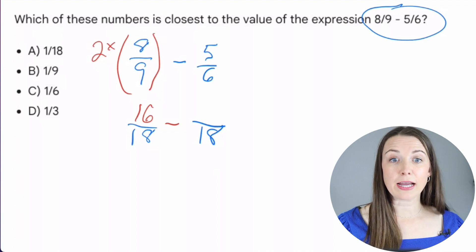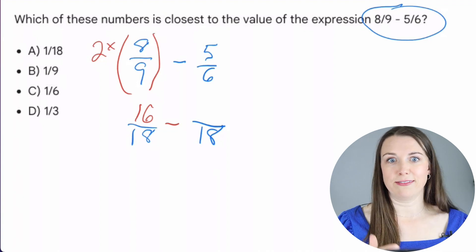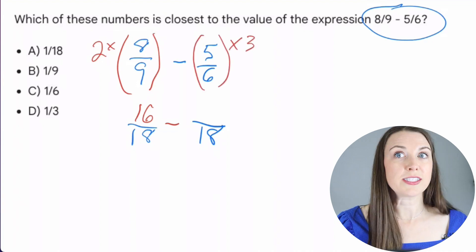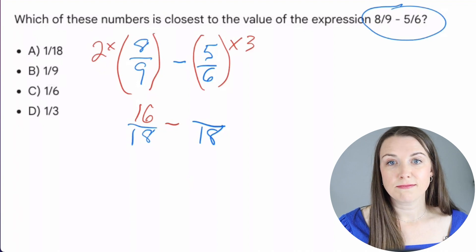Now, how many times does six go into 18? Three, right? So I'm going to multiply this times that by three. So six times three is the 18 on the bottom and five times three is 15.